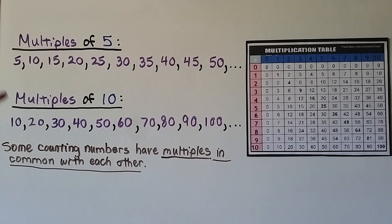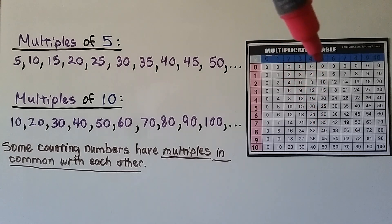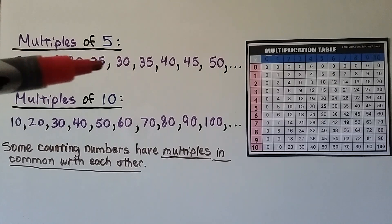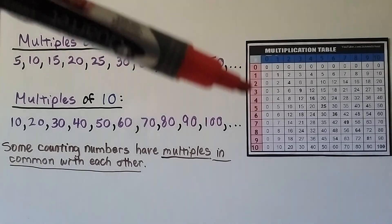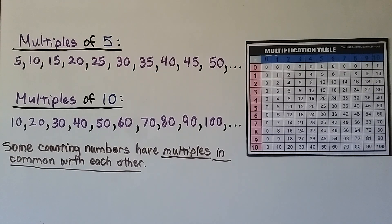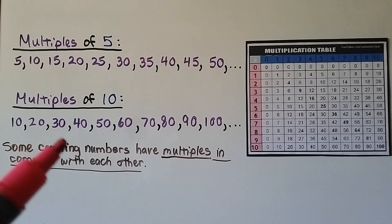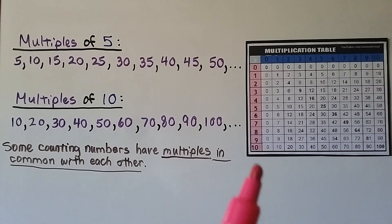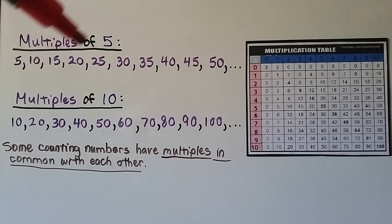The multiples of 5 come down from 5 in the multiplication table: 5, 10, 15, 20, 25, and so on — these are the products of 5 and another counting number. The multiples of 10 are 10, 20, 30, 40, 50, and so on. The multiples of 5 and multiples of 10 share many numbers in common: 10, 20, 30, 40, 50, and we could continue finding more.